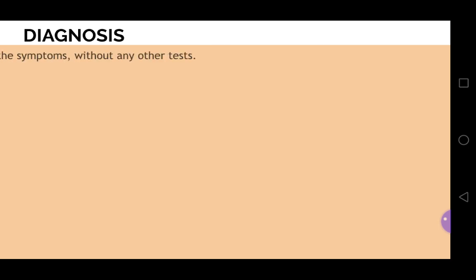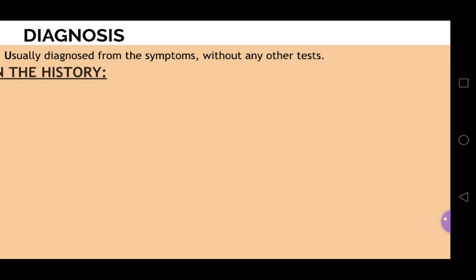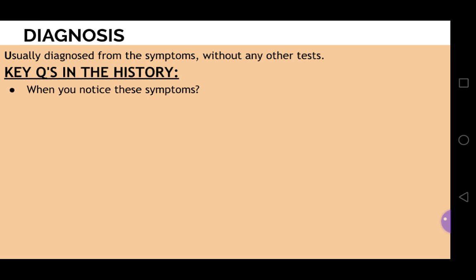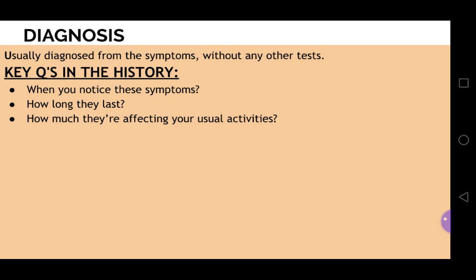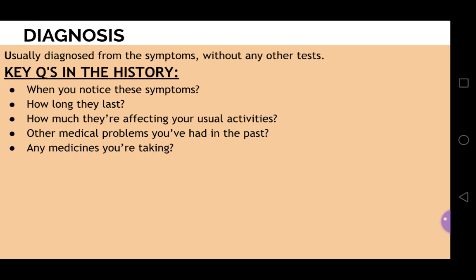How to diagnose: labyrinthitis and vestibular neuritis are usually diagnosed from the symptoms and history without any other tests. Key questions in the history which you need to ask: when did you notice these symptoms? How long do they last? How much are they affecting your usual activities? Any other medical problems you have had in the past? Any medicines you are taking or any change in your medications? Since when did these symptoms start, how did they start, and any history of recent infection?